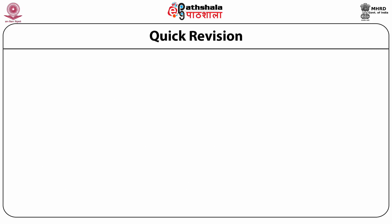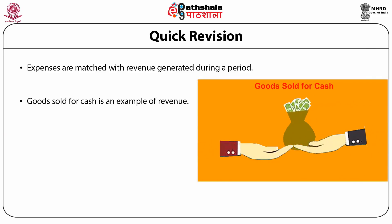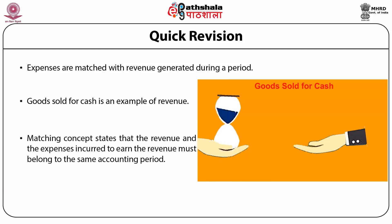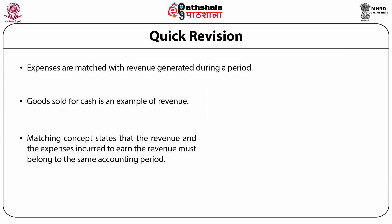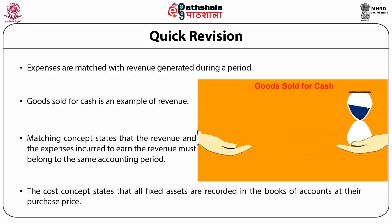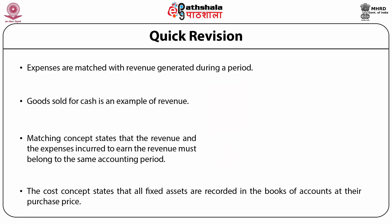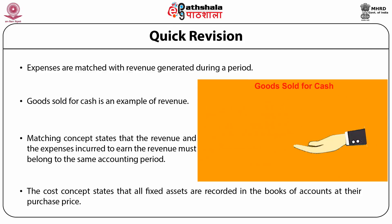Quick revision: expenses are matched with revenue generated during a period. Goods sold for cash is an example of revenue. The matching concept states that the revenue and the expenses incurred to earn the revenue must belong to the same accounting period. The cost concept states that all fixed assets are recorded in the books of accounts at their purchase price.